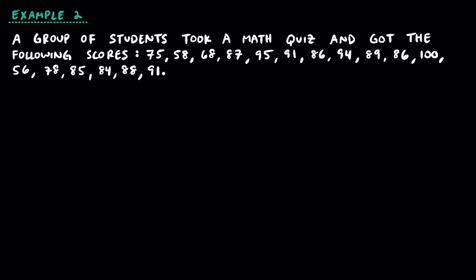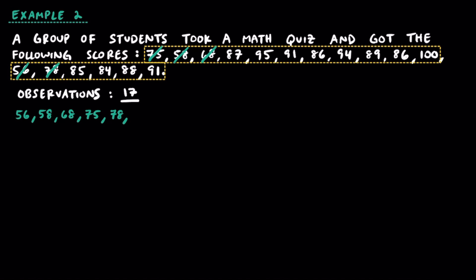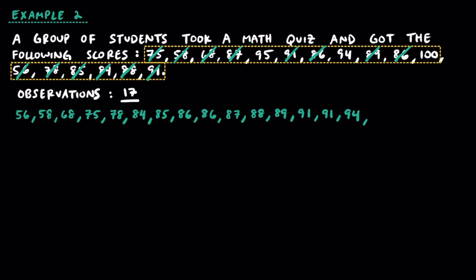Example 2. A group of students took a math quiz and got the following scores. We have 17 observations or 17 data points. Just like the last example, let's start by writing the data in order from least to greatest: 56, 58, 68, 75, 78, 84, 85, 86, 86, 87, 88, 89, 91, 91, 94, 95, and 100.